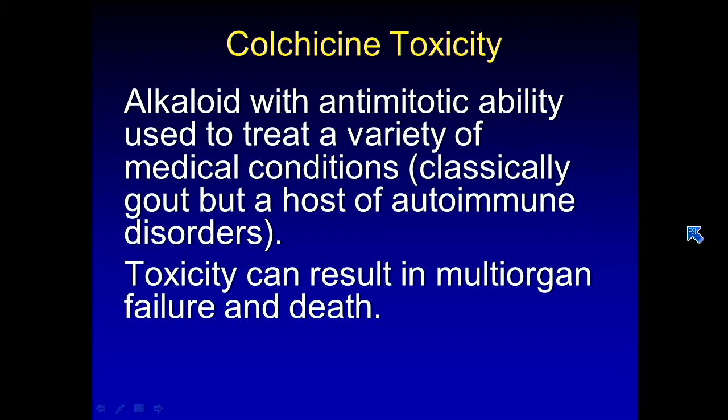Colchicine is an alkaloid with anti-mitotic ability, used for a wide array of medical conditions — classically for gout, but nowadays also for familial Mediterranean fever, lupus, rheumatoid arthritis, and several other immune conditions. It's kind of eye-of-newt medicine, and the rheumatologist tries it to see if the patient feels better. If the patient becomes toxic, it can prove lethal, so you don't want to mess around if you spot these changes.